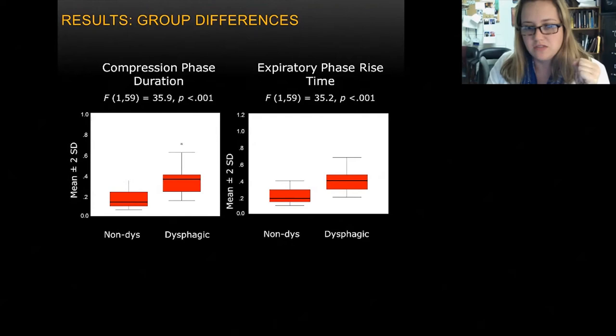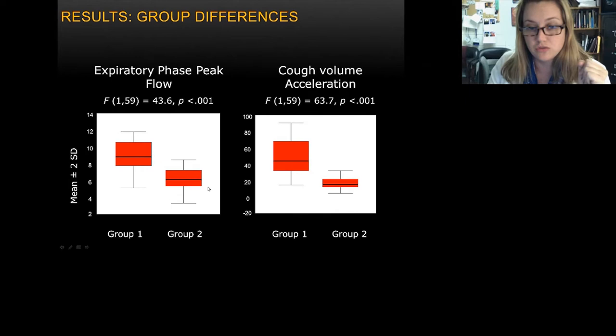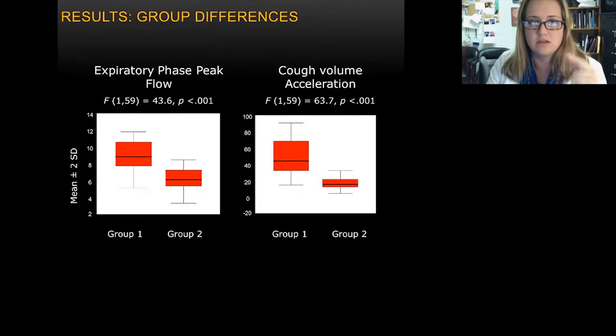Looking at group differences comparing dysphagic and non-dysphagic patients, dysphagic patients show a significantly longer compression phase, significantly longer rise times, much lower expiratory phase peak flow, and thus a less effective cough volume acceleration. Overall, their coughs are getting slower and less effective.